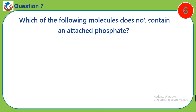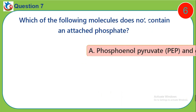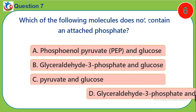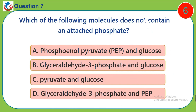Question 7. Which of the following molecules does not contain an attached phosphate? A, phosphoenolpyruvate and glucose. B, glyceridehydryphosphate and glucose. C, pyruvate and glucose. D, glyceridehydryphosphate and phosphoenolpyruvate.